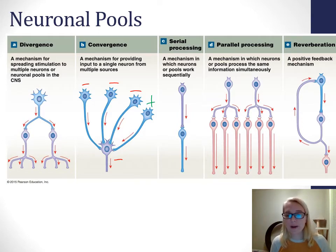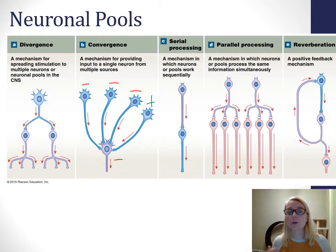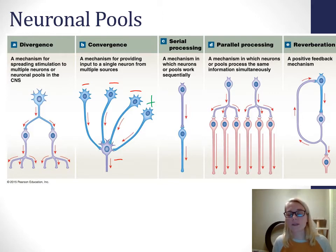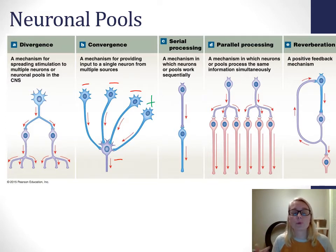Parallel processing is a combination of divergence and serial processing — multiple similar pools processing information at the same time. We'll see this in our withdrawal reflex example at the end of the video, where stimulation comes in and simultaneously information is being processed in one leg, the arms, and the pain centers in your brain. That's parallel processing.